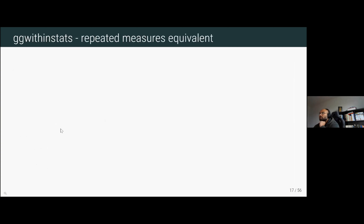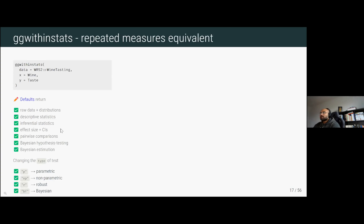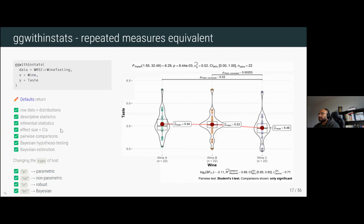Not all group-related hypotheses are for between-subjects designs — sometimes you have a within-subjects design. For this, the package provides the gg_within_stats function. The function call looks nearly identical to gg_between_stats: you give it data, x, and y, and the defaults return all the same details. The only difference in the plot is that the centrality measure points are connected to show that the data is repeated measures.